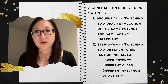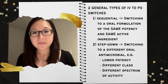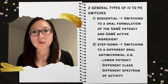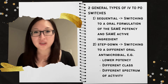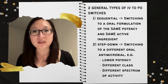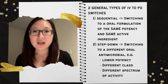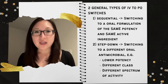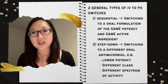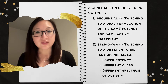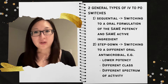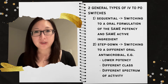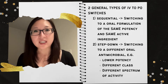The second type of IV to oral switch is called step-down therapy. Step-down refers to changing an IV antimicrobial to a completely different oral agent. The oral antimicrobial agent may result in lower potency because of lower oral bioavailability, meaning you're not achieving the high serum levels of its IV form. Or you're changing an IV to an oral antibiotic in a completely different class or with a different spectrum of activity. An example of a step-down therapy switch would be changing IV ceftriaxone, a third-generation cephalosporin, to oral cefuroxime, which is a second-generation cephalosporin.